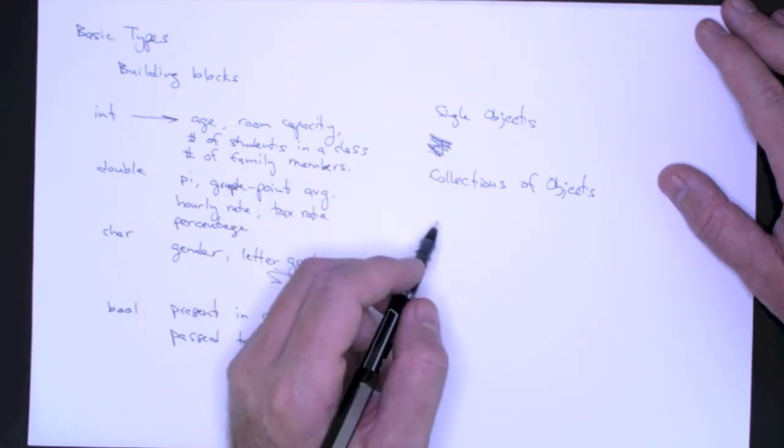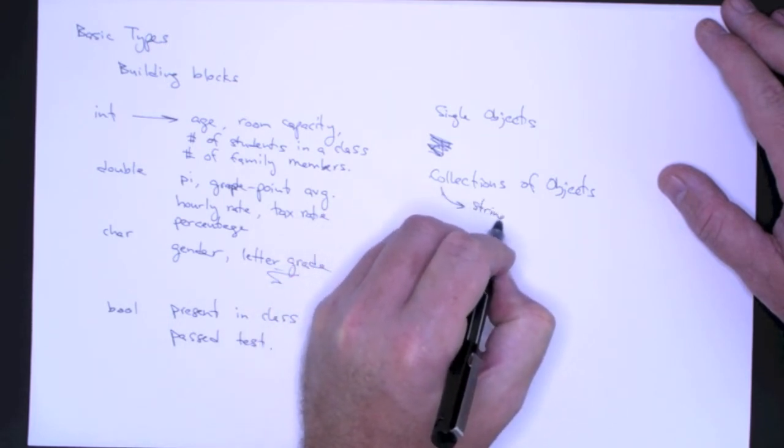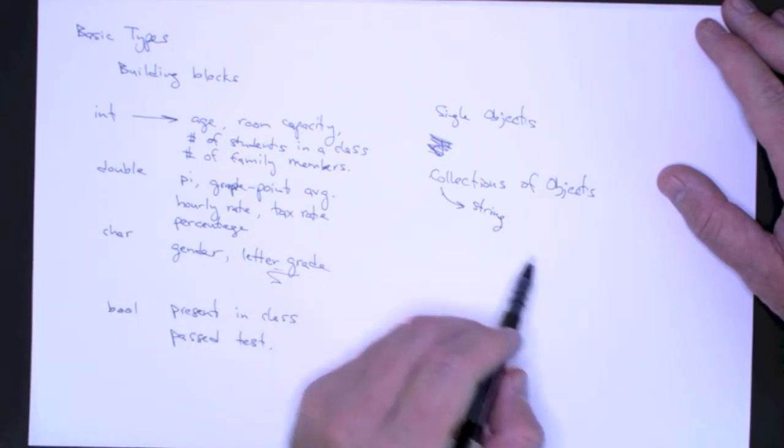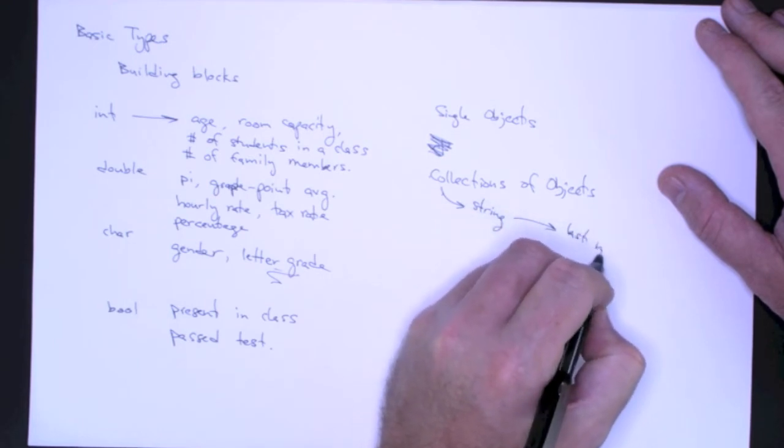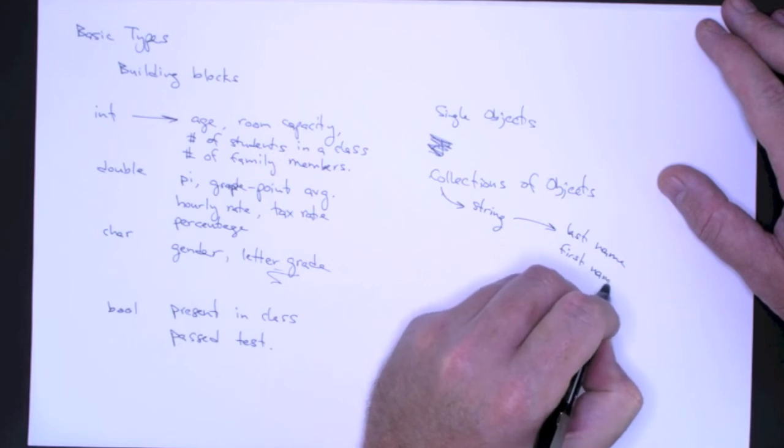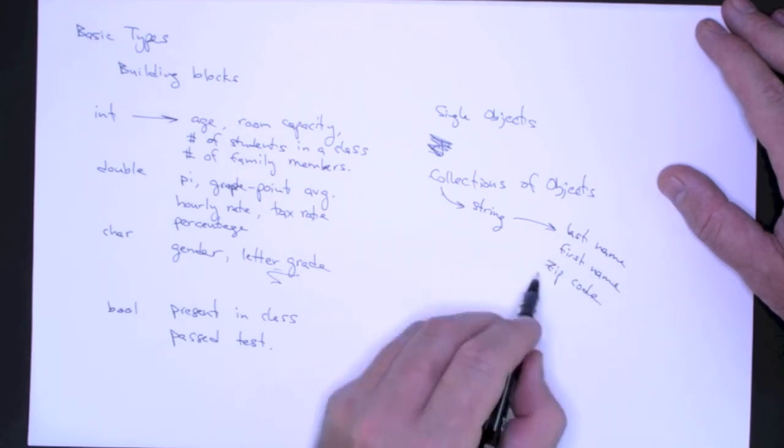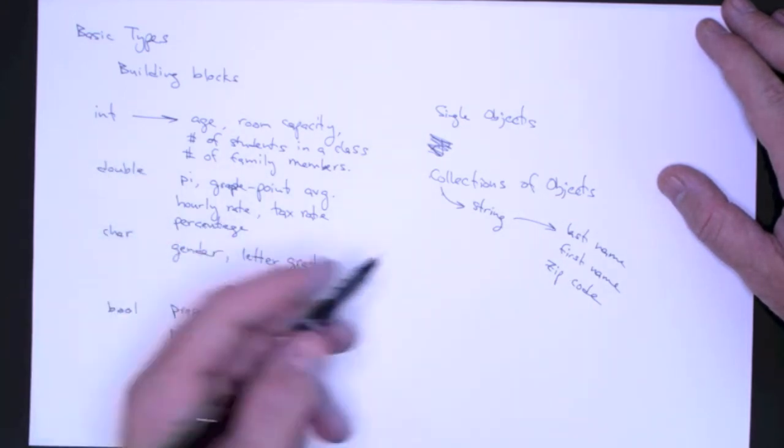Now, we've already encountered collections of objects. We have the string class, for example. Well, the string is a collection of characters. And with the string, we can represent things like last name, first name, zip code. And actually, this is an important point. Why wouldn't I use an integer to represent zip code?